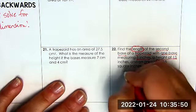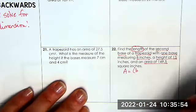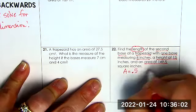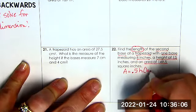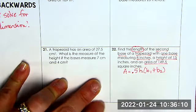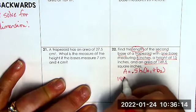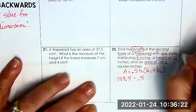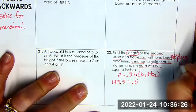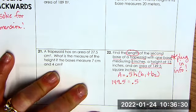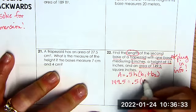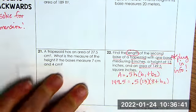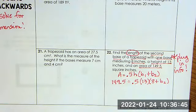First thing I got to do is write my formula. A equals B1. I might use a different formula for this one. I'm going to use 0.5 height times B1 plus B2, just because it might lend itself a little bit easier. You can use whichever one you want. 149.5 equals 0.5. So now I'm plugging in the information. Plug in info. So I know that my height is 13. I know that B1 is 8 plus B sub 2. I don't know what B sub 2 is. So therefore, that's what I'm solving for.